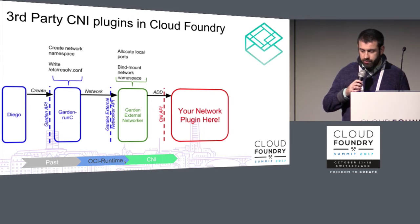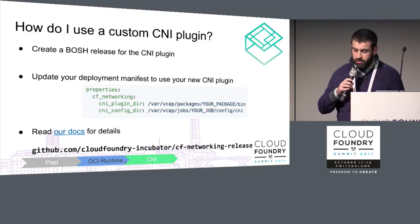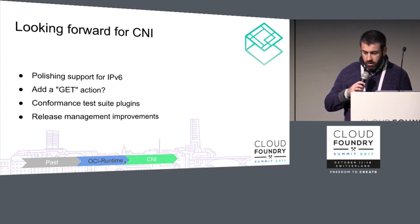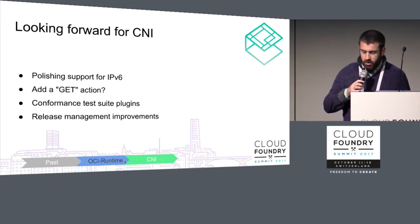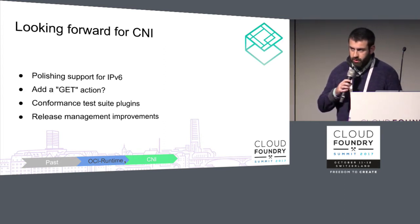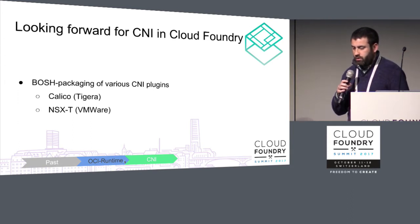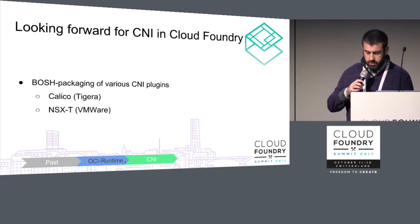If you're interested in integrating third-party network solutions, you make a BOSH release for your CNI plugin and update your deployment manifest to set some properties, and Cloud Foundry will deploy with your networking plugin. For the wider CNI community, we're polishing up IPv6 support, talking about adding a new verb to the standard, adding conformance test suites to verify plugins are doing the right thing, and doing release management improvements. In Cloud Foundry, more CNI BOSH releases are coming — Calico is working on one, and VMware is working on one for NSX.